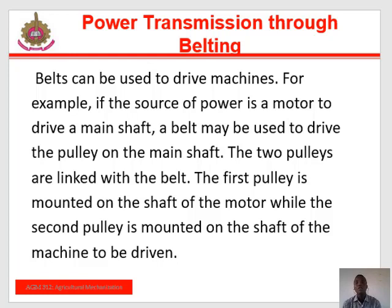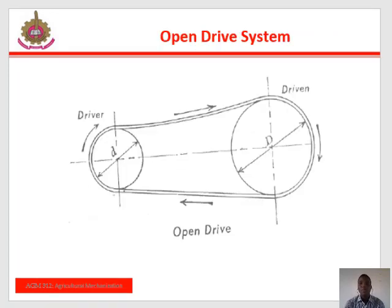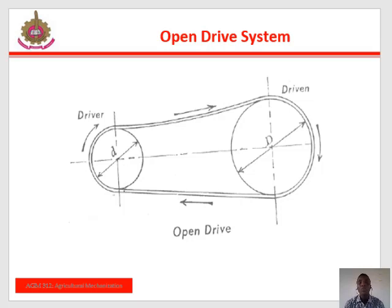Two systems of drive are possible for this arrangement: we have the open system and then we have the crossed system. For the open drive system, the driver and the driven rotate in the same direction as shown on the slide, while in the crossed drive system, the driver and the driven rotate in the opposite direction. It should be noted that the power transmitted by belting devices depends on the strength of the belt and friction between the belt and the pulley. In other words, the grip between the belt and the pulley upon which the driving depends is caused by the friction between the belt and the pulley.